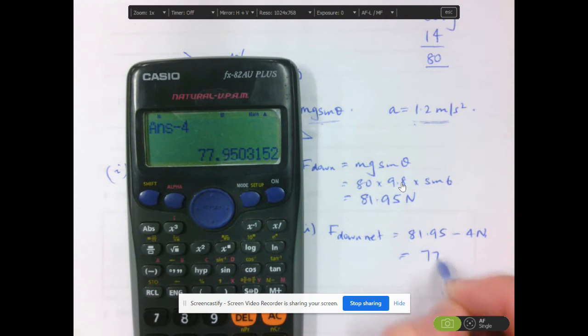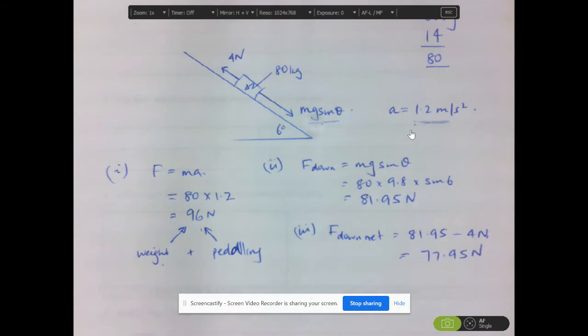That's 77.95 newtons going down the plane. Right, now, don't forget that this is the weight component, reduced because of the friction.